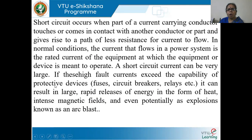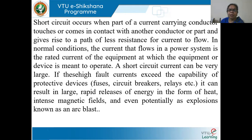Now we all basically know what a short circuit is. A short circuit occurs when part of a current-carrying conductor touches or comes in contact with another conductor, giving rise to a path of least resistance. When a short circuit occurs, the path of the current is not what it is intended for — that means it takes a path which it is not meant to take. Under normal conditions, the current that flows in a power system is the rated current of the equipment at which the equipment or device is meant to operate. All our electrical appliances, big or small, have a rated current, and we have protective equipment which will protect the device if the current exceeds the rated value.